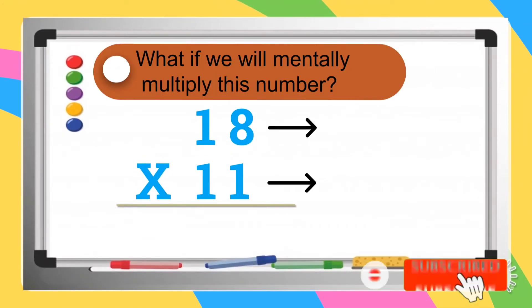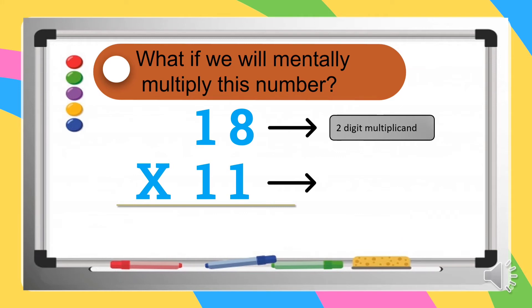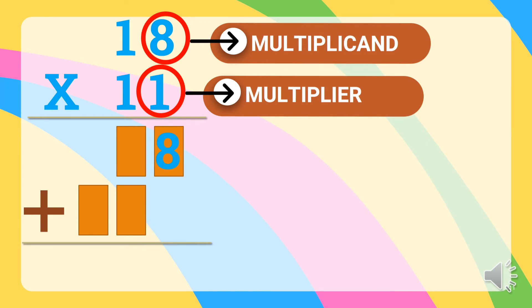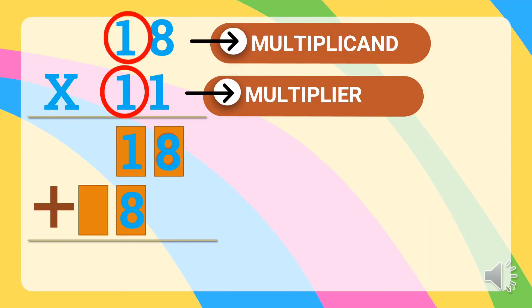What if we will mentally multiply this kind of number? Which is 18 as the 2-digit multiplicand and 11 as the 2-digit multiplier. So let's try to multiply 18 and 11. 1 times 8 is equal to 8. 1 times 1 is equal to 1. 1 times 8 is equal to 8. 1 times 1 is equal to 1. So let's bring down 8. Then let's add 1 plus 8 is equal to 9. Then bring down 1.